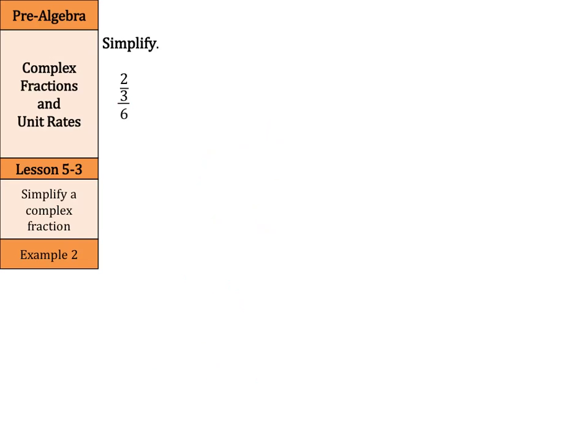What about two-thirds over six? Two-thirds over six. Well, this is two-thirds divided by six. And recall, any whole number, we can just write over one.